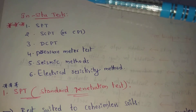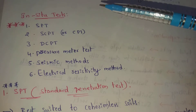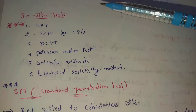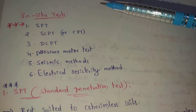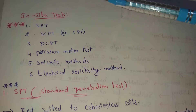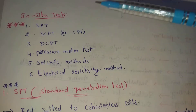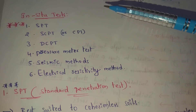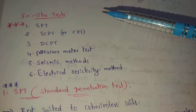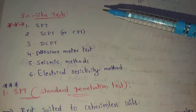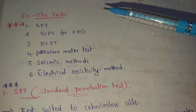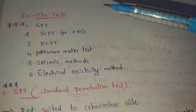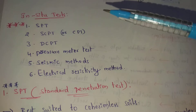SPT method is carried out in a borehole. On the other hand, SCPT and DCPT — Static and Dynamic Cone Penetration Tests — are carried out without a borehole. So for SCPT and DCPT tests, we do not need to drill a borehole.